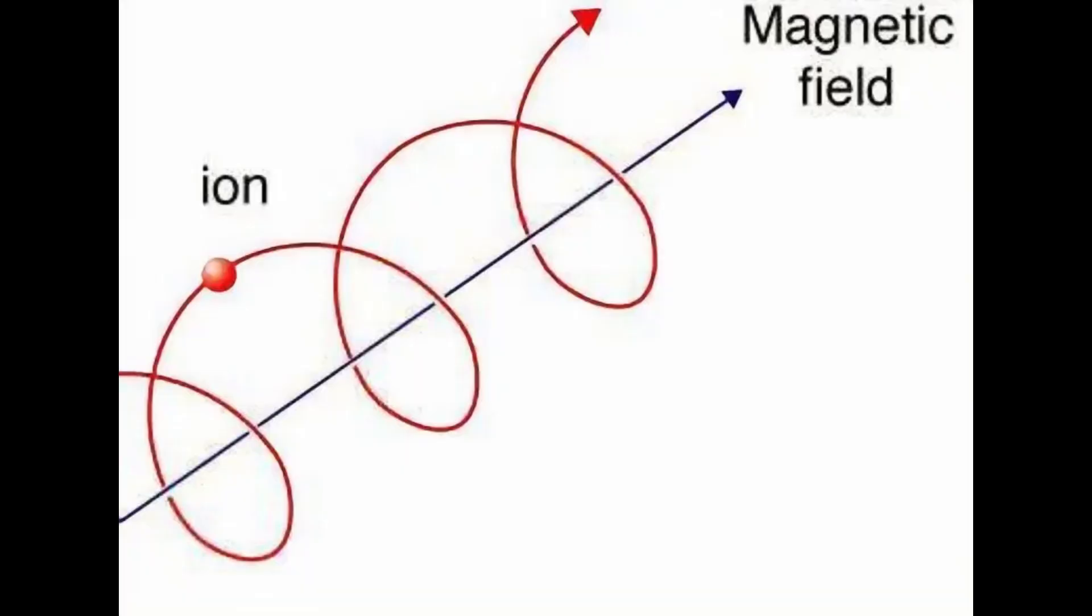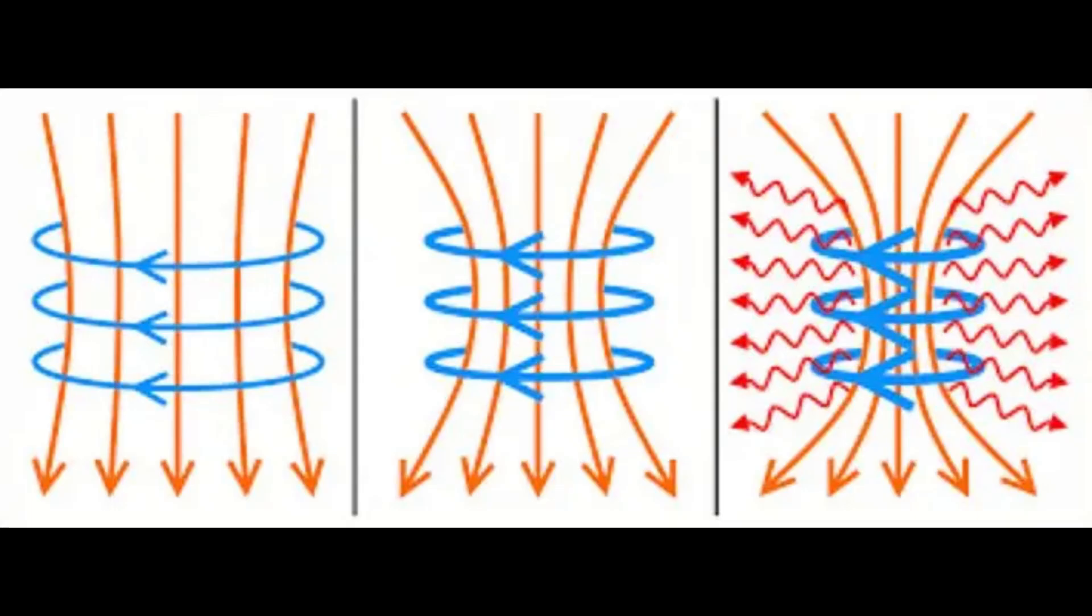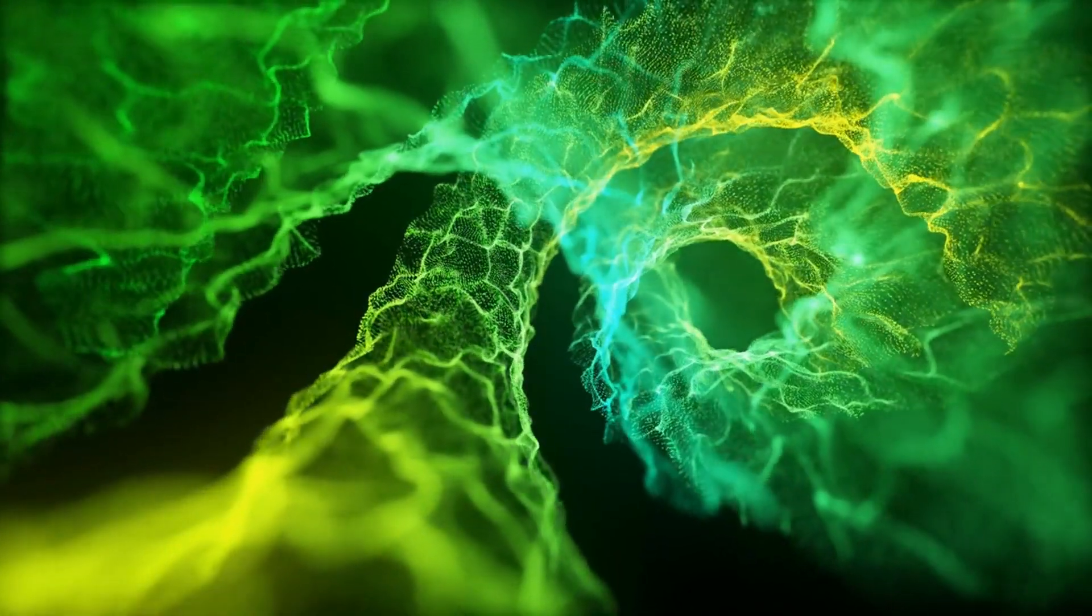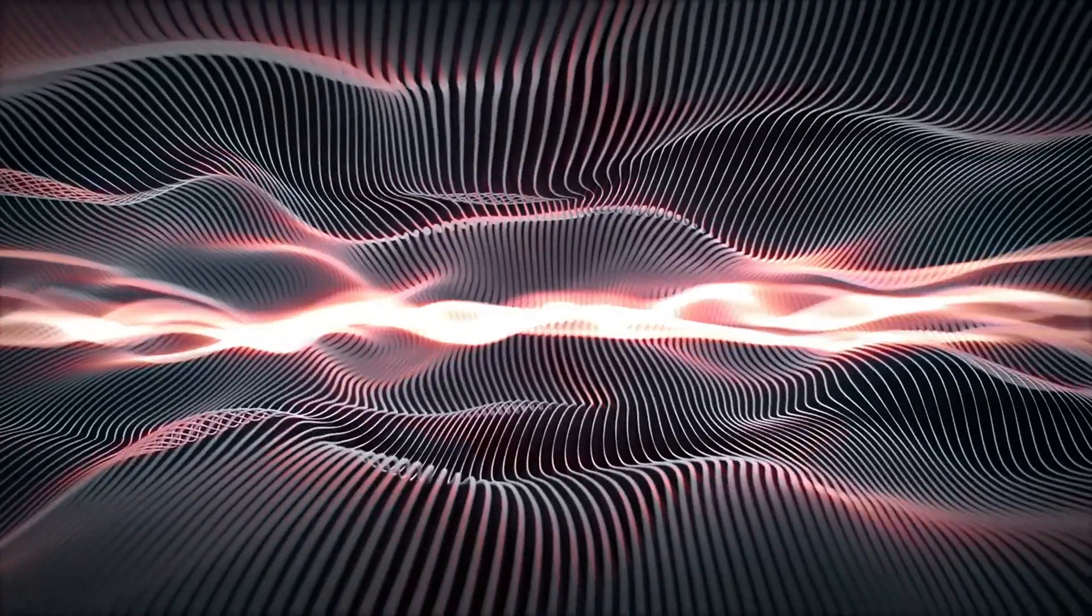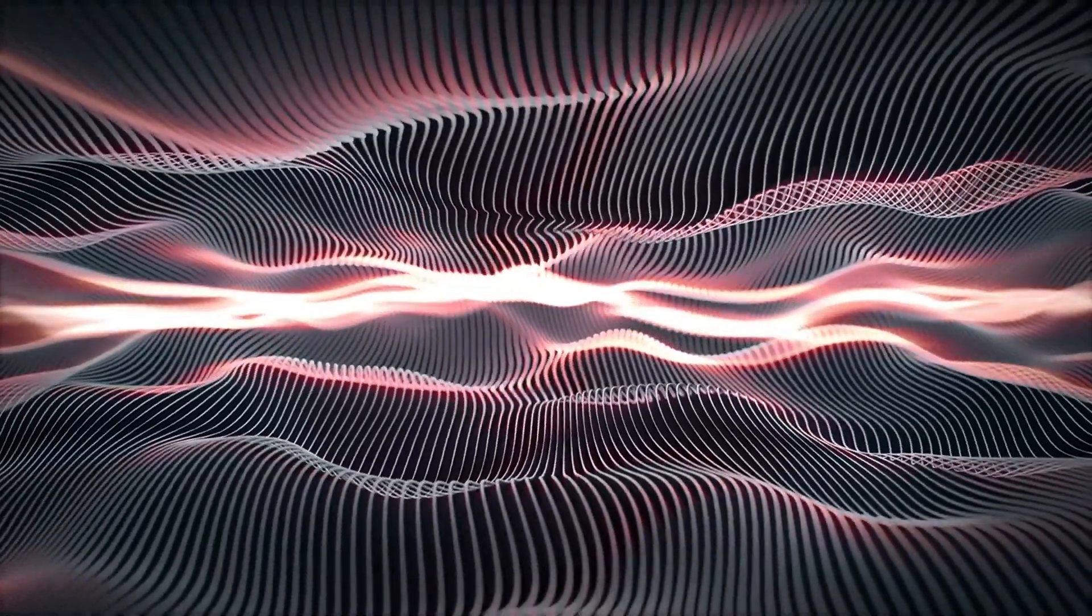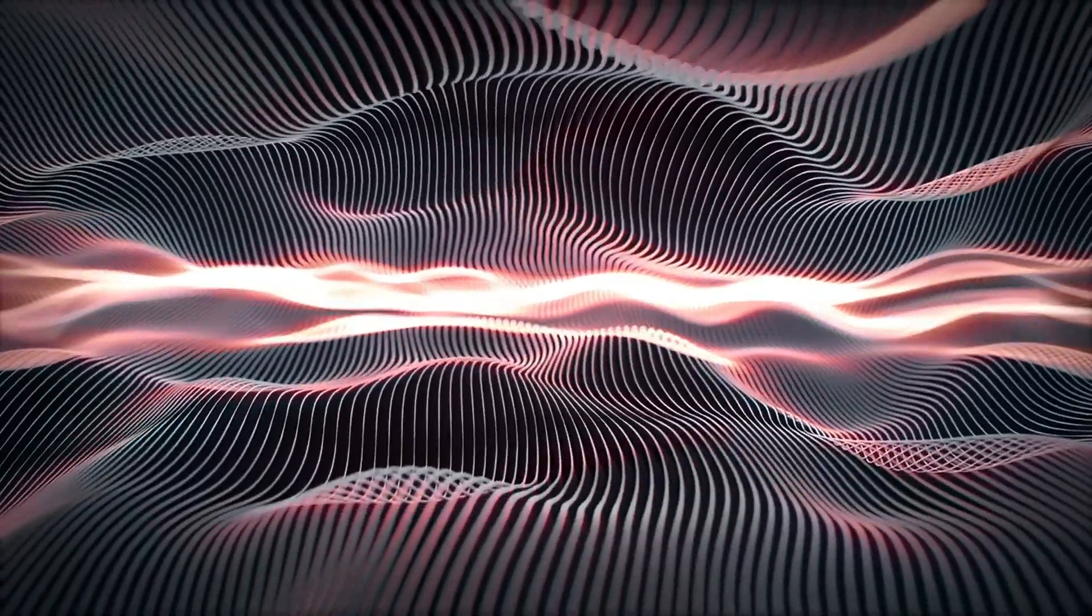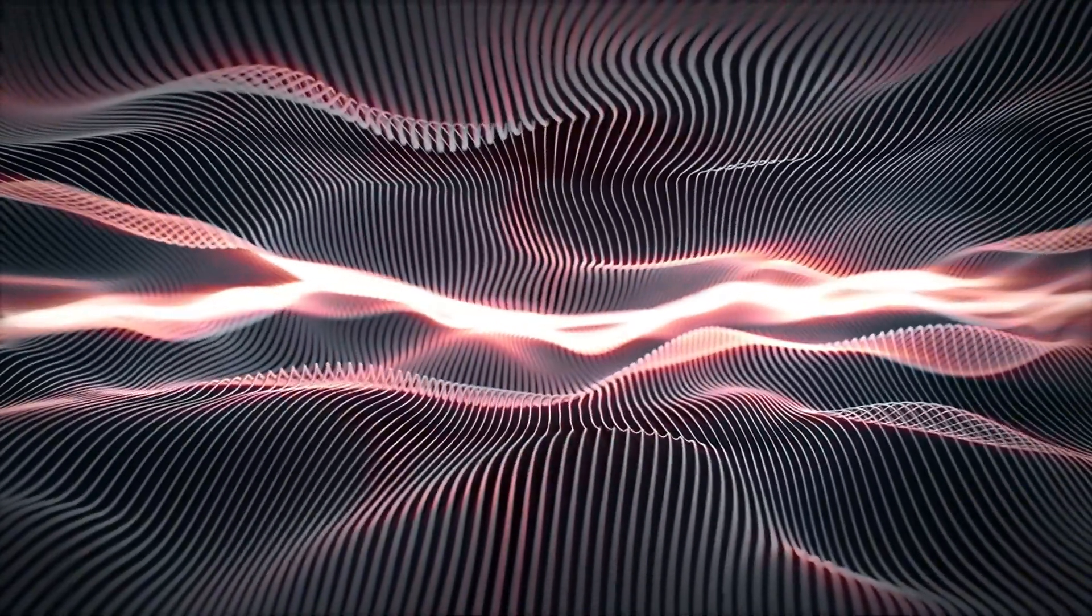When electric current flows through plasma, it creates a magnetic field that circles around it. That magnetic field pulls inward on the plasma, compressing it. This is called the pinch effect. The stronger the current, the tighter the pinch. Eventually, the plasma contracts into a narrow tube called a filament and acts like a natural electromagnetic wire suspended in space.